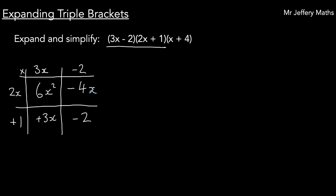Now what I then need to do, now that I've expanded it, is simplify by collecting together the like terms. So 6x squared — I don't have any other x squareds so that stays as it is. Then negative 4x collects with positive 3x, giving me negative x, and then I've got minus 2 on the end.